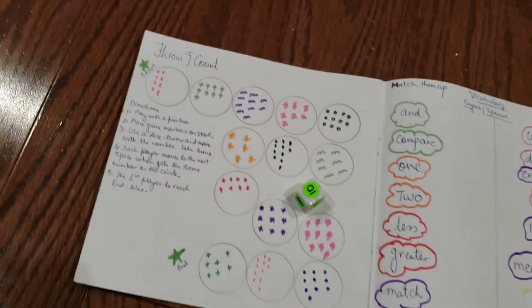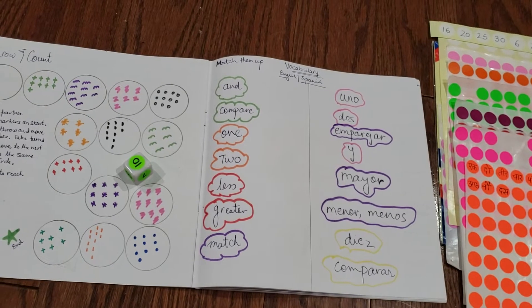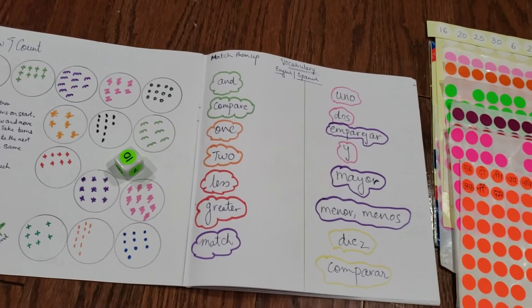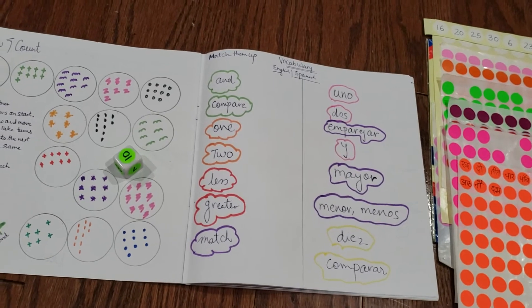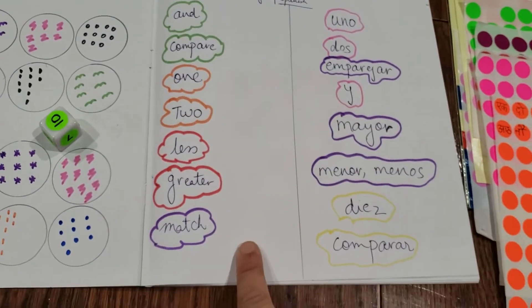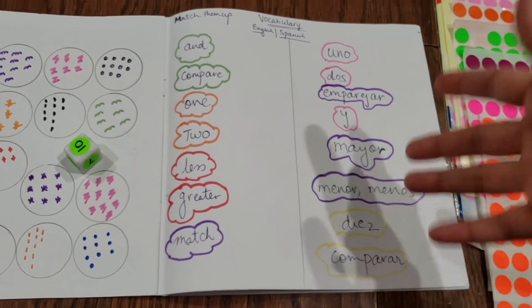The second one is vocabulary basics - a few words that we use in maths. Because he's learning Spanish as well, just to brush up, I have written the words and the meanings or words we say in Spanish are here. He needs to just match them.